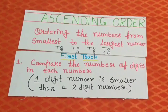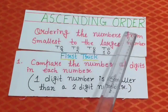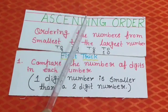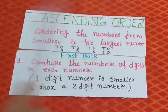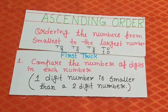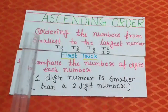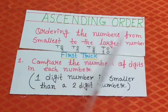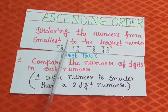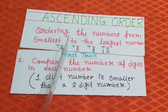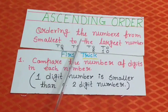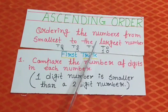Let's begin. The spelling of ascending order is A-S-C-E-N-D-I-N-G, and order is O-R-D-E-R. You know very well what is the meaning of ascending order: ordering the numbers from the smallest number to the largest number. Here you can see I have already arranged the numbers from smallest to largest: 3, then 5, then 8, then 10. 3 is less than 5, 5 is less than 8, and 8 is less than 10.